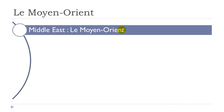Le Moyen-Orient. It's interesting here because normally if you would have only this word, you would pronounce it 'Moyen.' But then as you've got this vowel after, you get to make the liaison between the two. Le Moyen-Orient, Moyen-Orient.